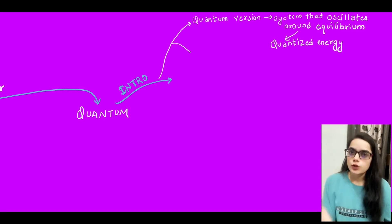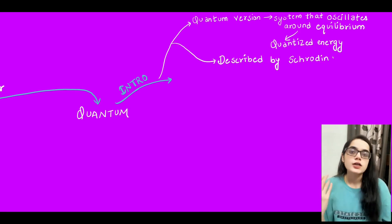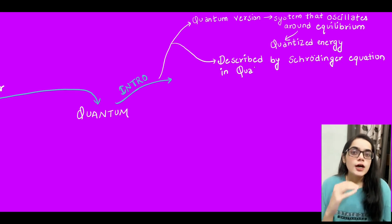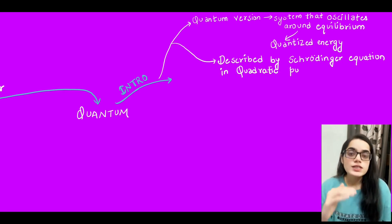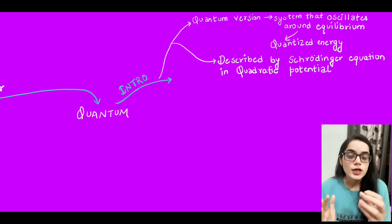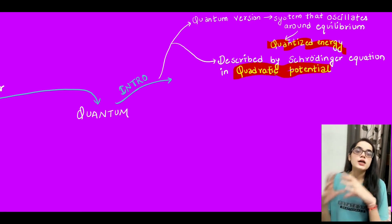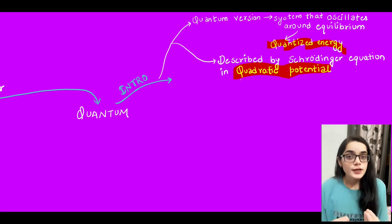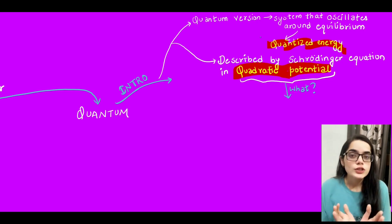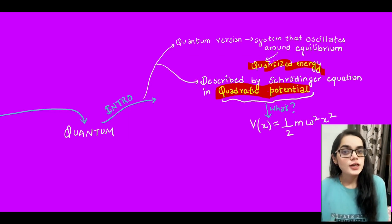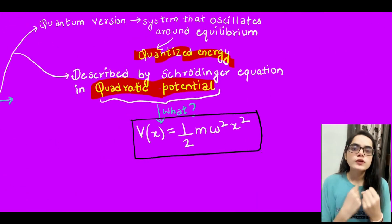When we solve the Schrödinger equation, we get our wave function. In quantum oscillators, the energy is quantized — it will have specific, discrete energies that are not continuous. This means a particle cannot have just any energy; some energies are forbidden. The potential energy from the classical case, ½mω²x², is a quadratic potential that confines the particle in which it oscillates. We generate a Schrödinger equation to obtain the wave function.